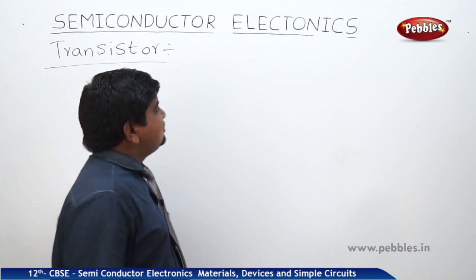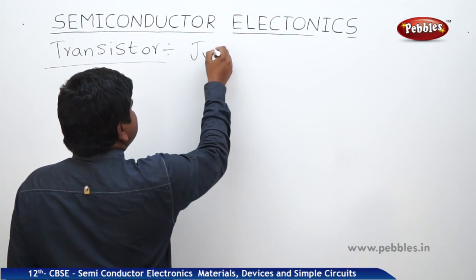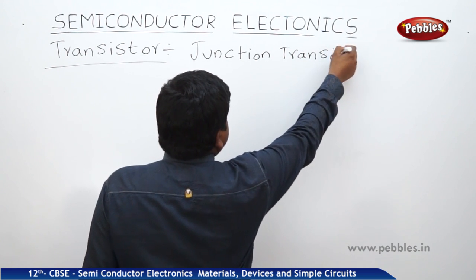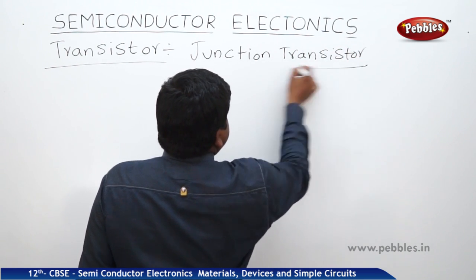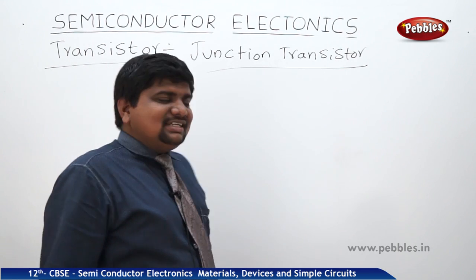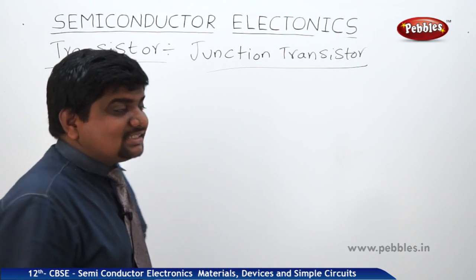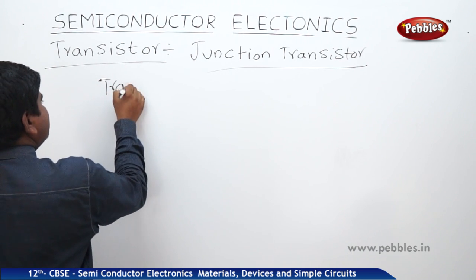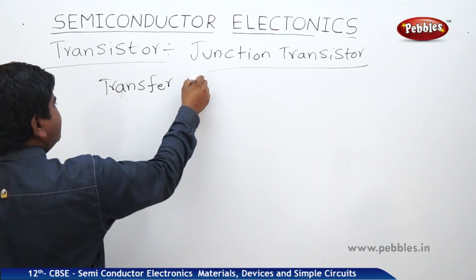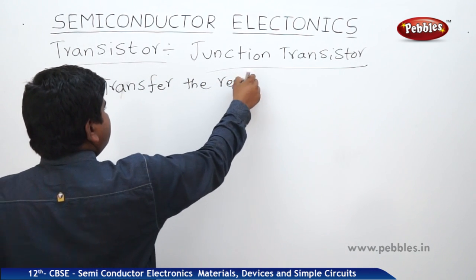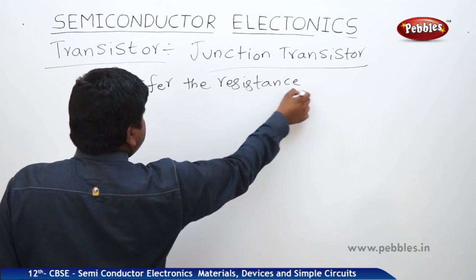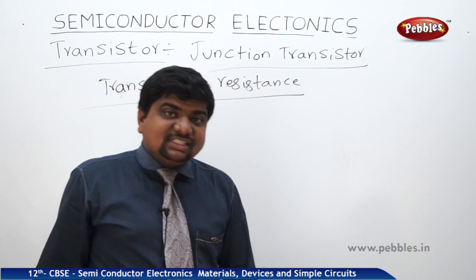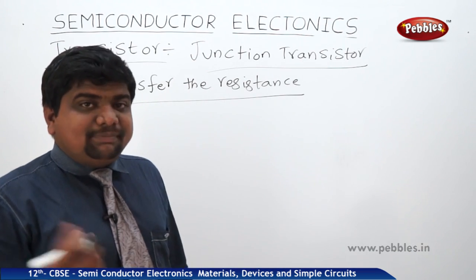This is also called a junction transistor. The word transistor itself means 'transfer the resistance' — from high resistance to low resistance or from low resistance to high resistance, depending upon the biasing.